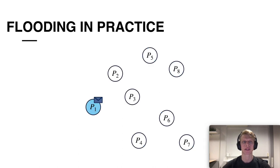All right, so let's look at how such flooding protocols are actually implemented in practice. If P1 wishes to send a message then they will choose a random subset of the parties as their neighbors and forward the message only to these neighbors.